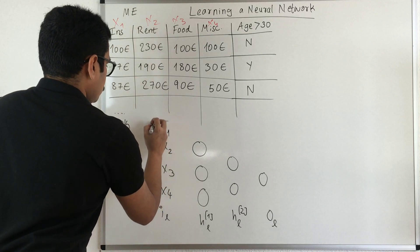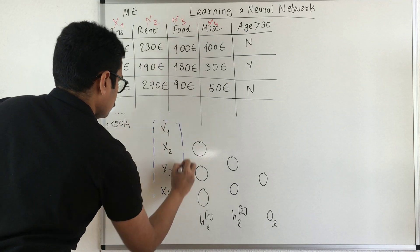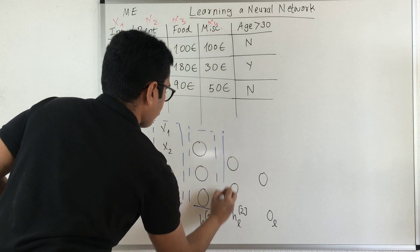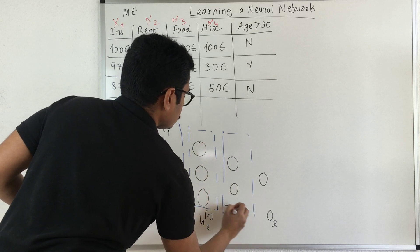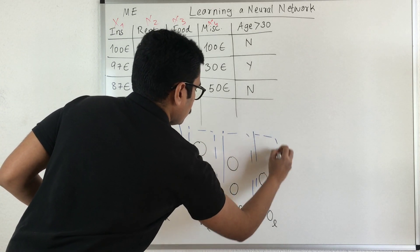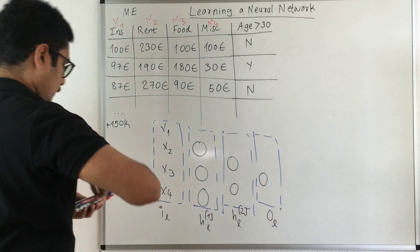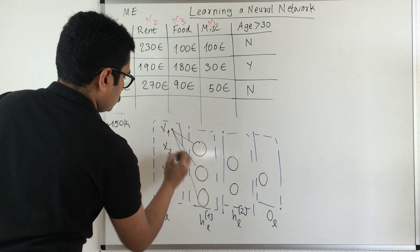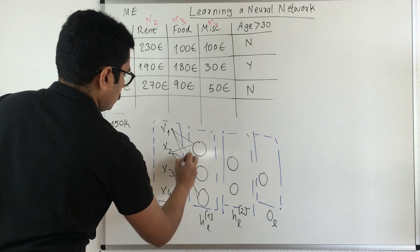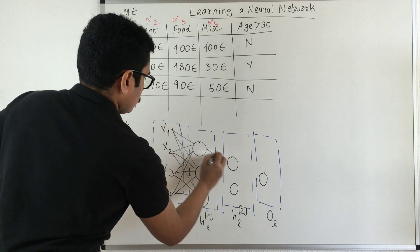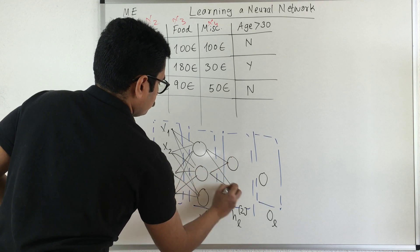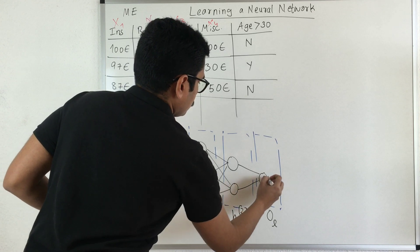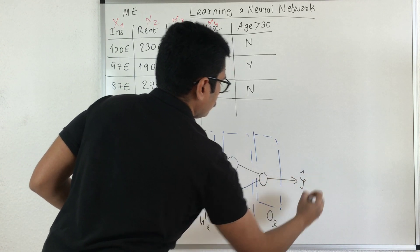Let me label this: this is my input layer, this is my first hidden layer, this is my second hidden layer, and this is my output layer. I have these connections going. This gets inputs this way, and then you have final output - that is y predicted.